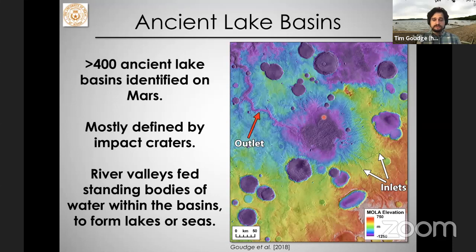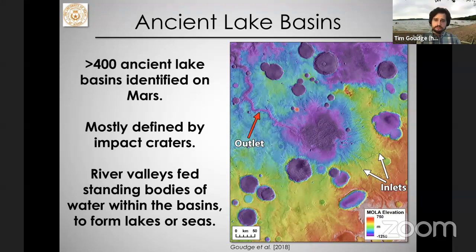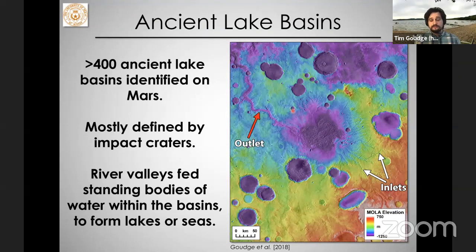We also see evidence of closed basin lakes — hydrologically closed lakes — where there's just water flowing into a topographic basin with no outlet. Over 400 of these have been identified on Mars, providing a significant record of lakes across the planet. Most are defined by circular or near-circular impact craters. In this particular case, this would have been a very large lake — almost 200 kilometers across.